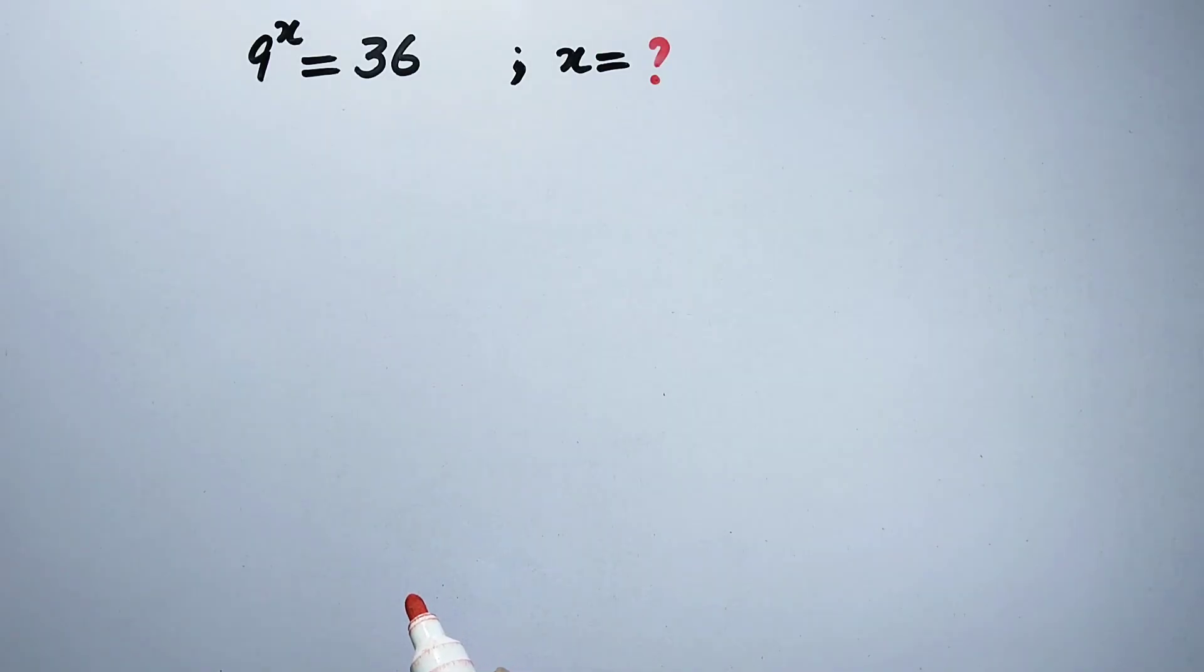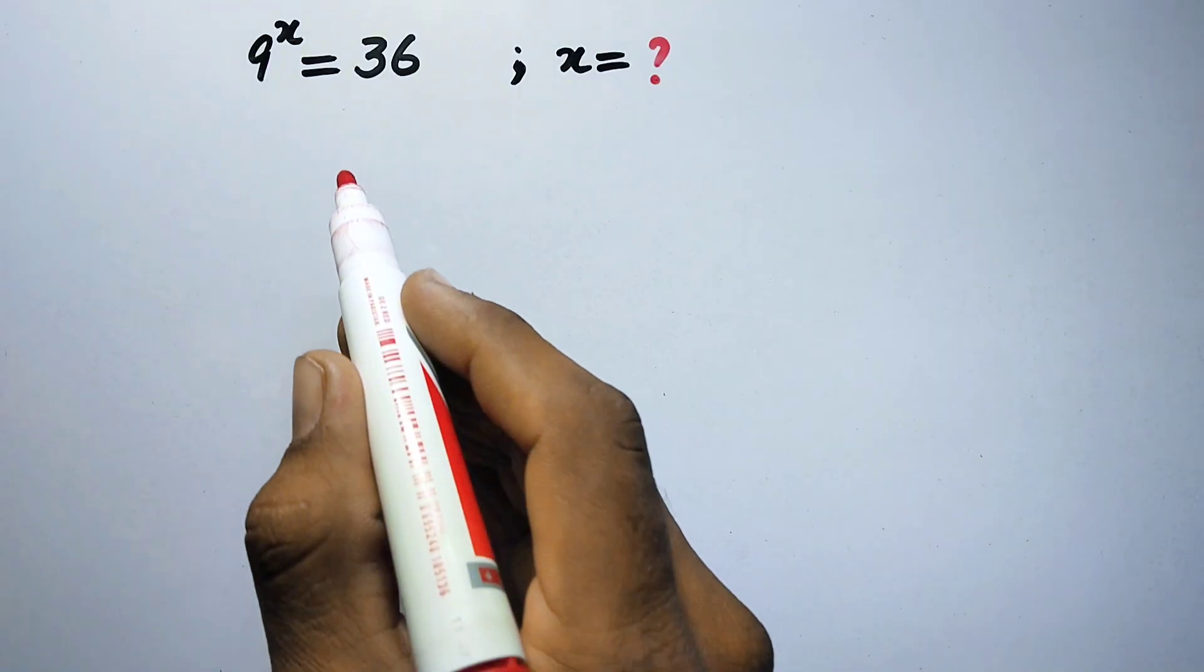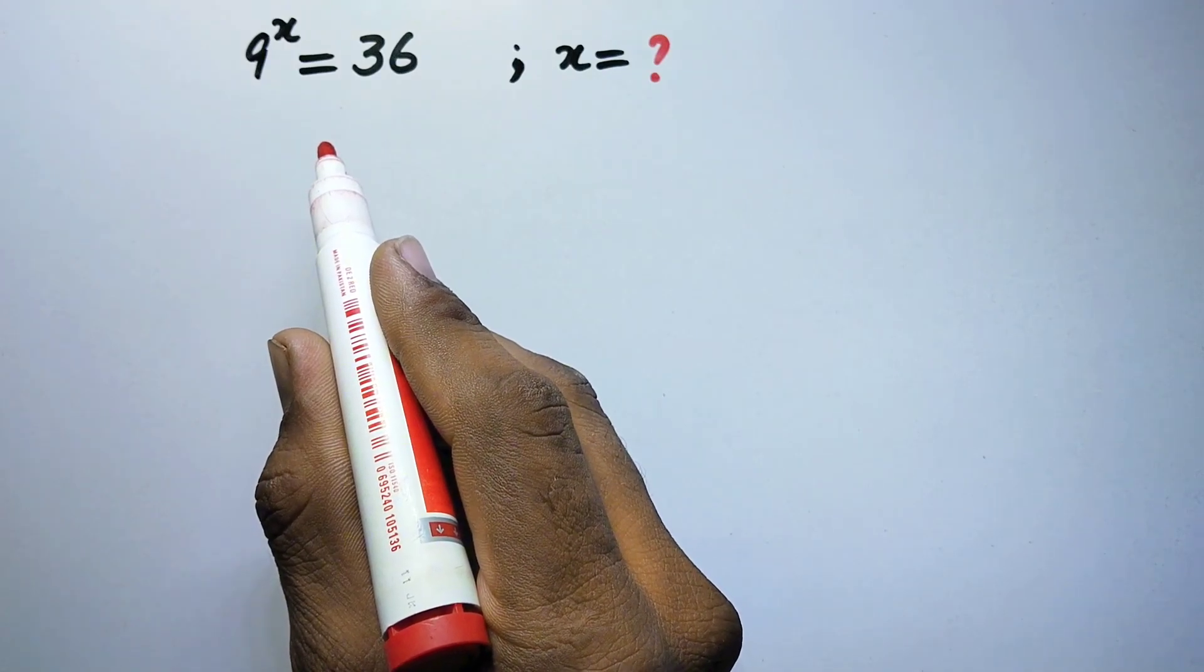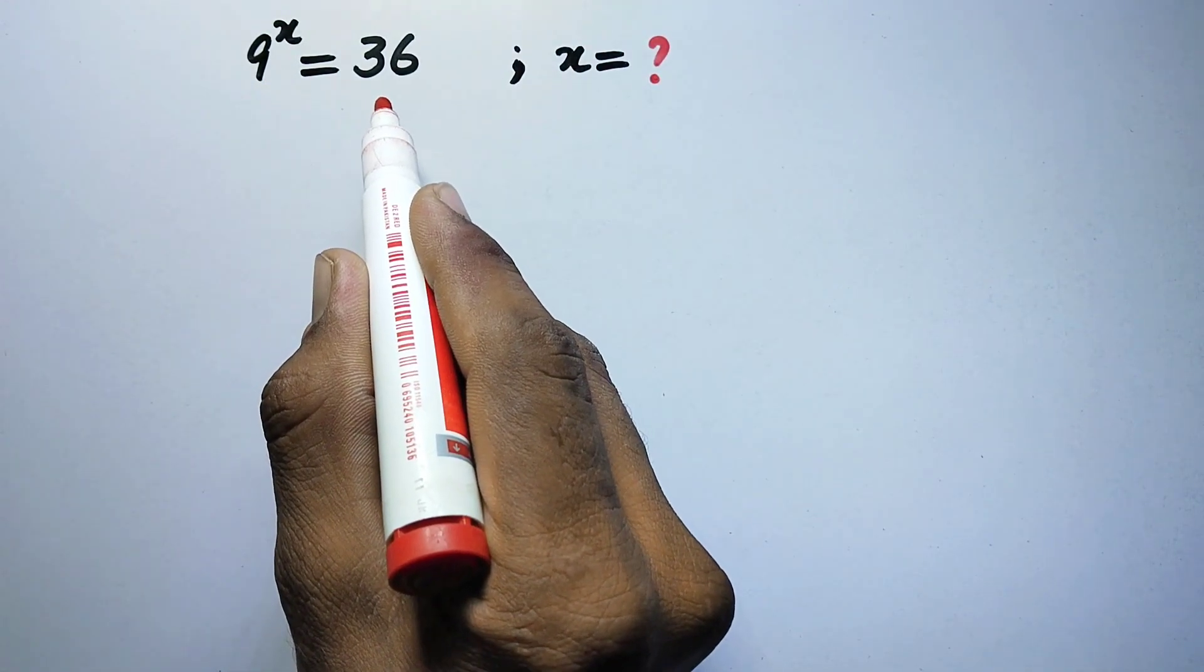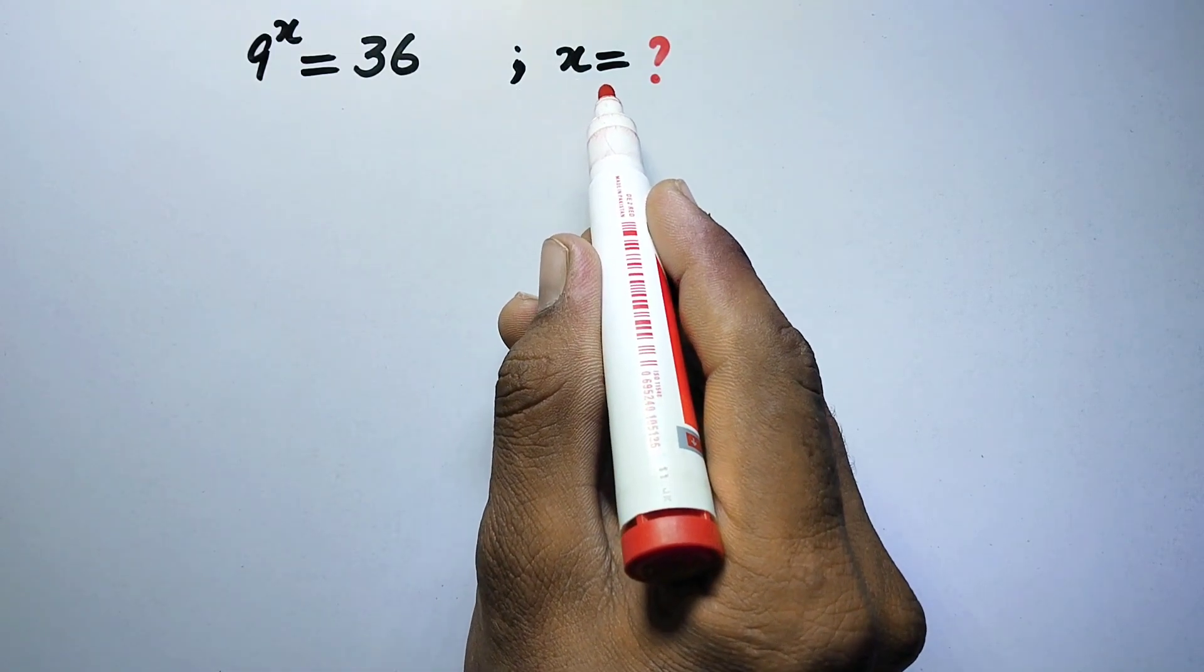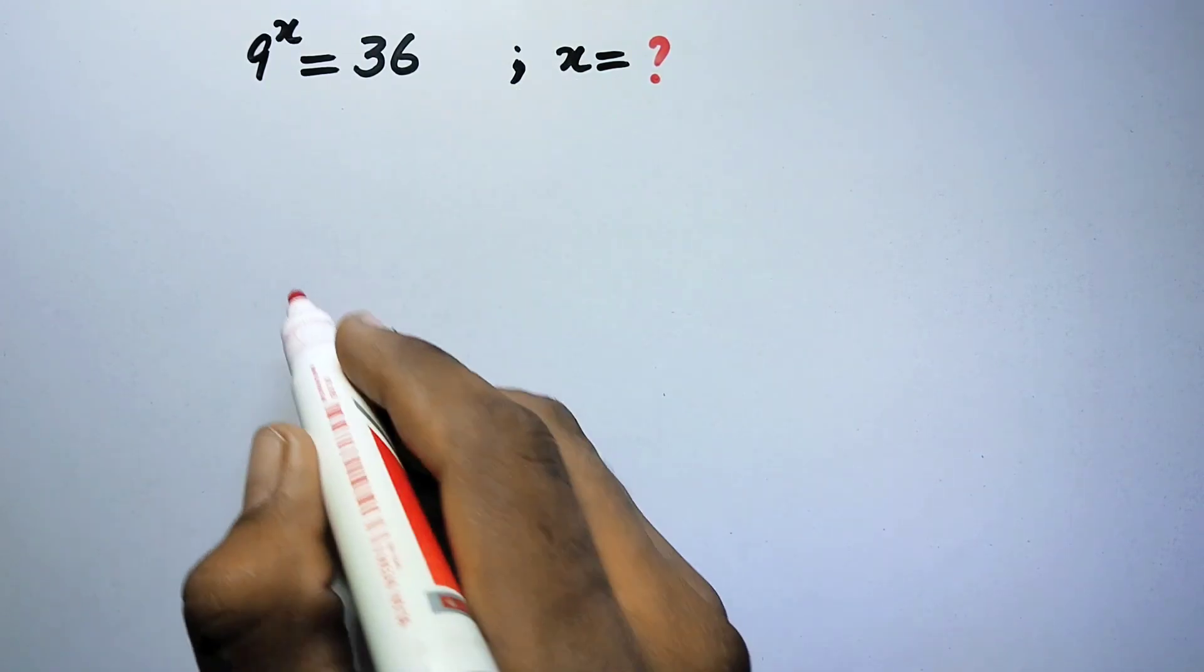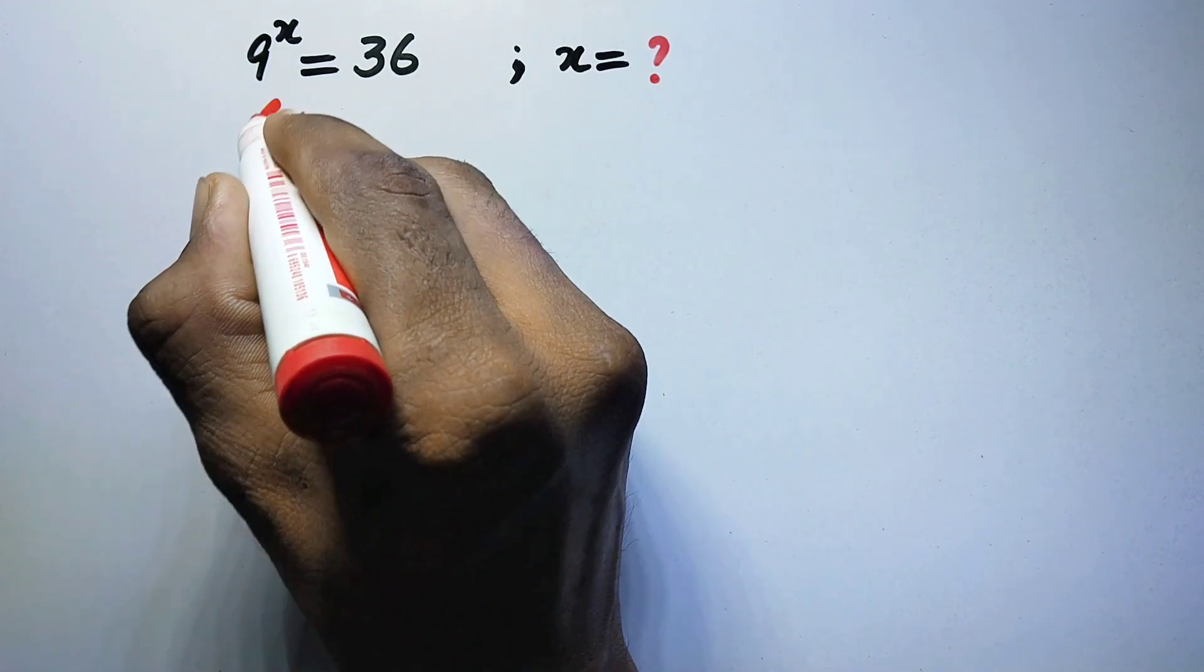Hello everyone and welcome to Explore Maths. In this video we are going to solve the problem: 9 to power x is equal to 36, and we have to find the value of x. So let us see its solution.